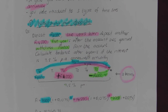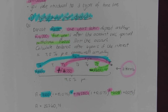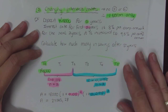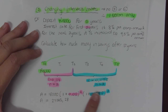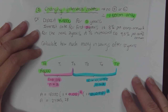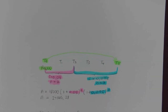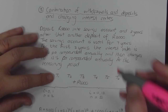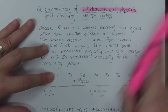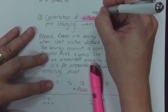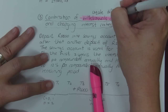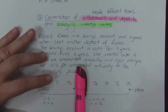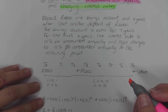So the first type was withdrawals and deposits — every deposit and every withdrawal creates a new term. When I have changing interest rates, it means that I had one deposit made but it was exposed to two different interest rates. So what was the third type you were exposed to in Grade 10? When we combine withdrawals and deposits with changing interest rates. Let's look at an example.